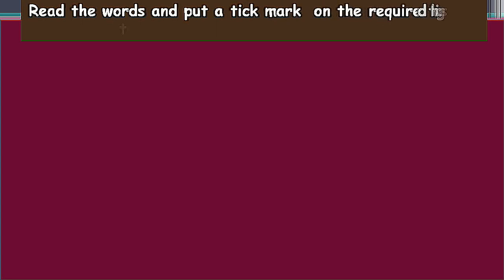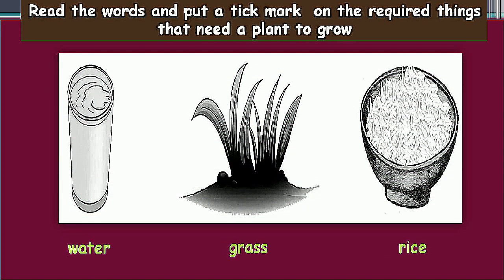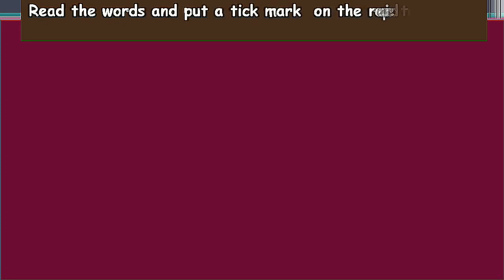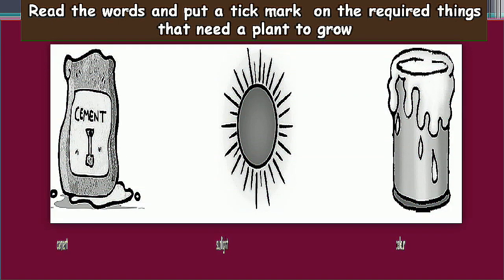Read the words and put a tick mark on the required things that need a plant to grow. The picture is there. First we read the words related to pictures: water, grass, rice. The basic thing that plants need to grow — water is the primary thing.